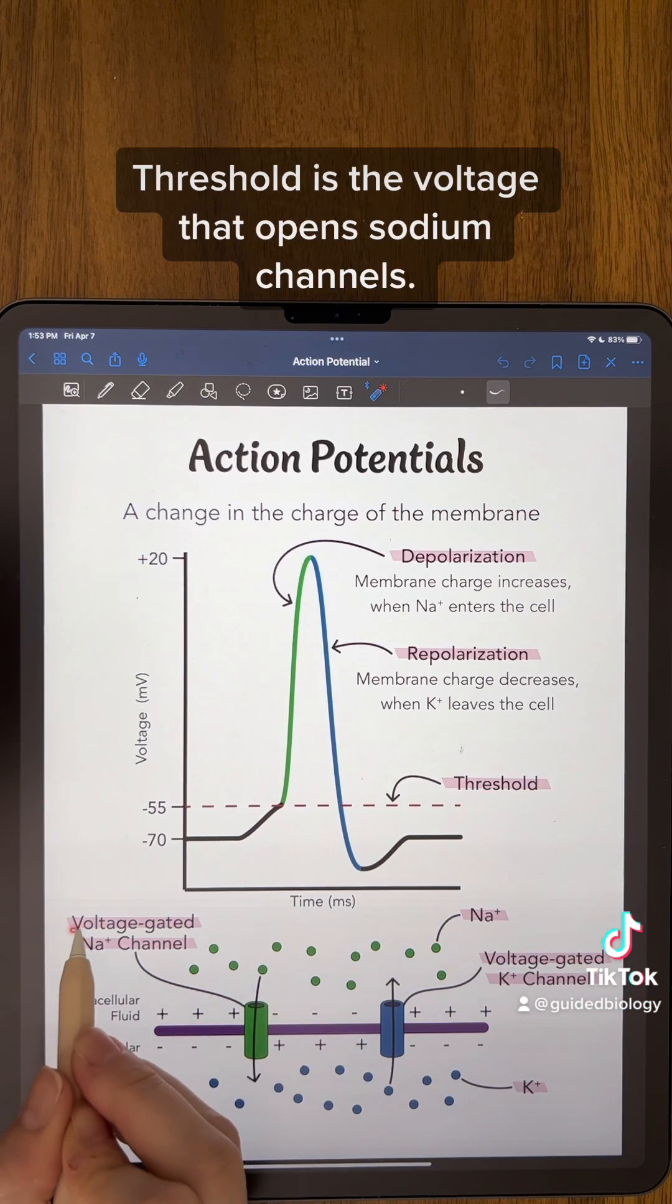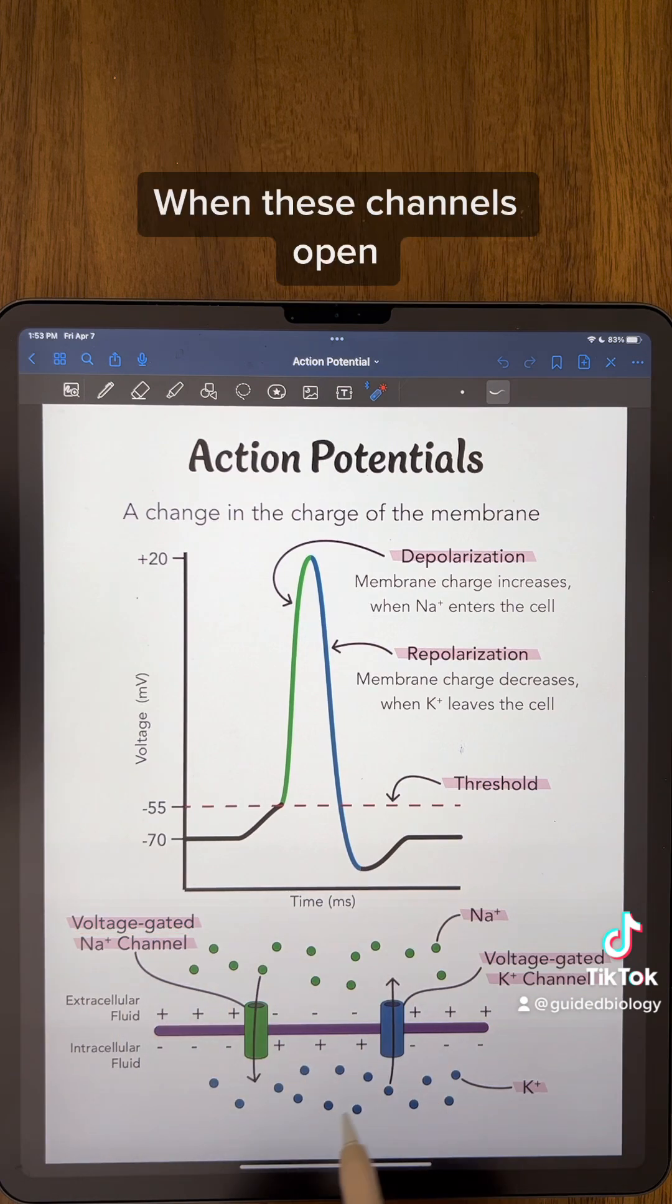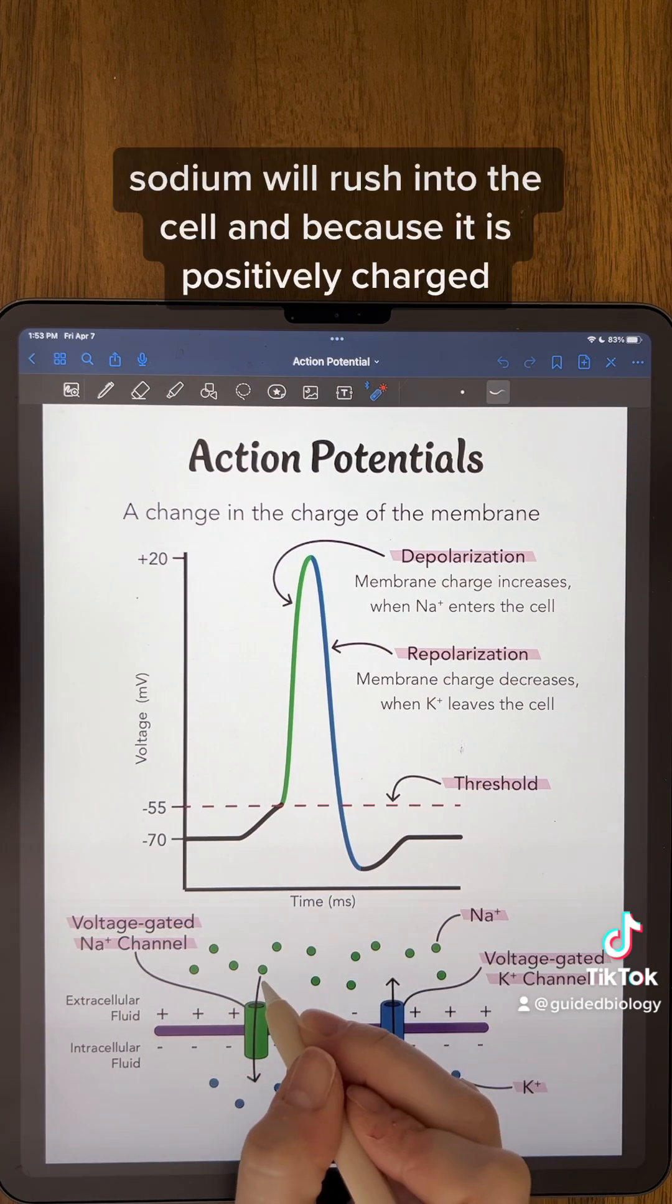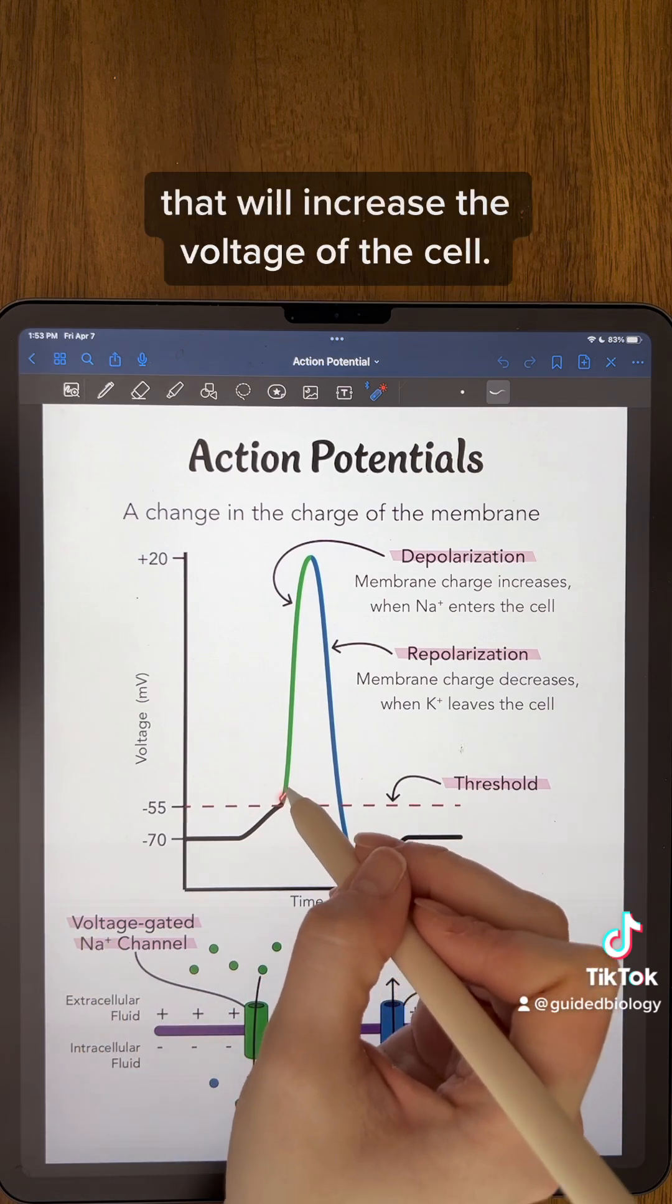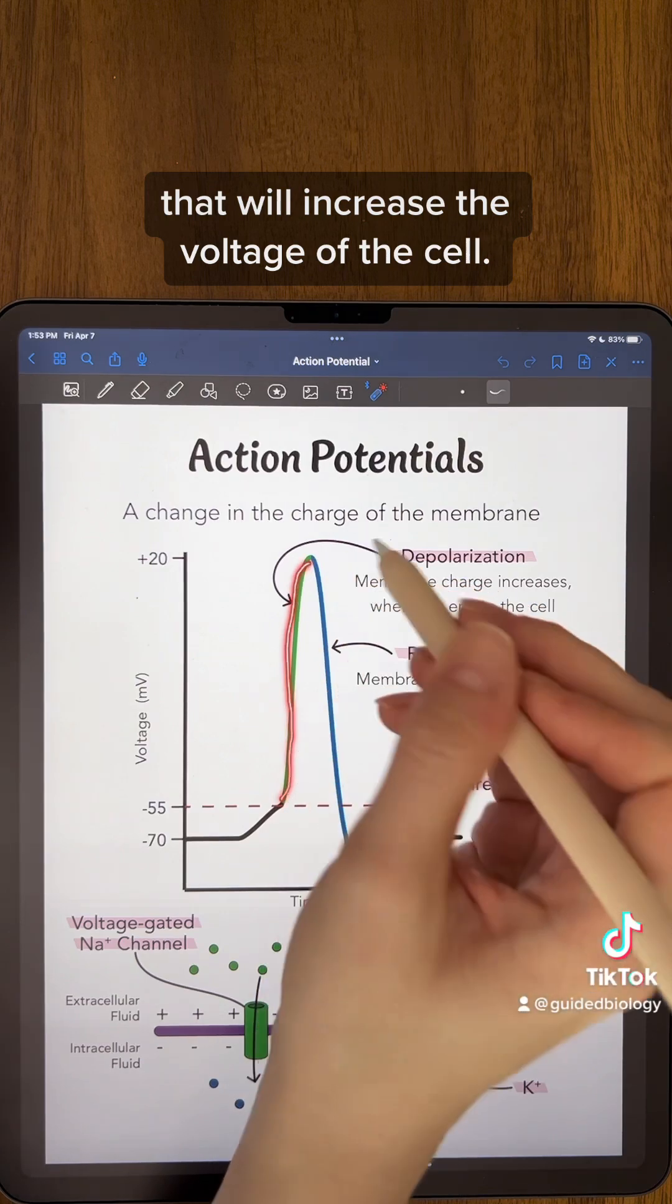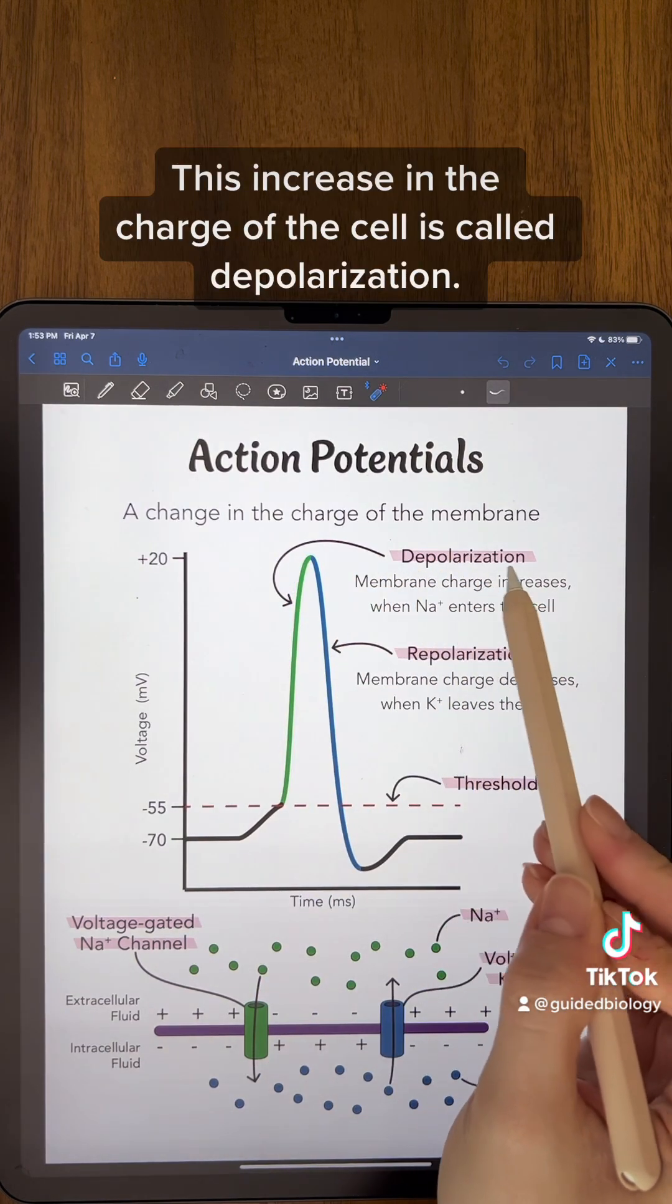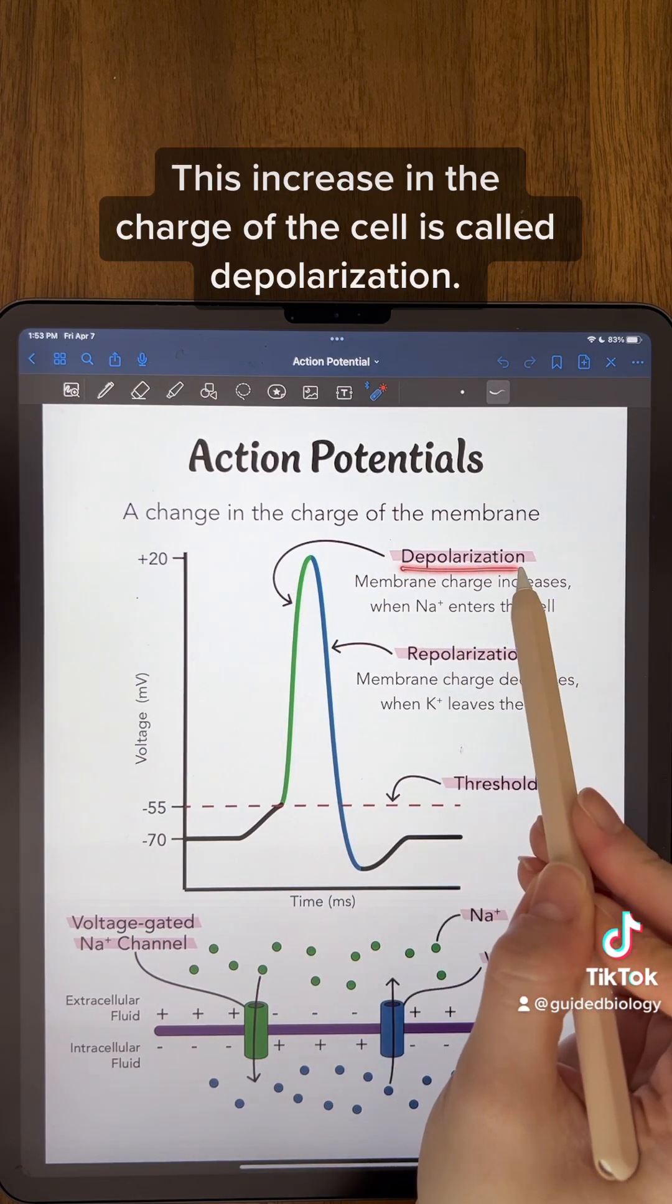Threshold is the voltage that opens sodium channels. When these channels open, sodium will rush into the cell, and because it is positively charged, that will increase the voltage of the cell. This increase in the charge of the cell is called depolarization.